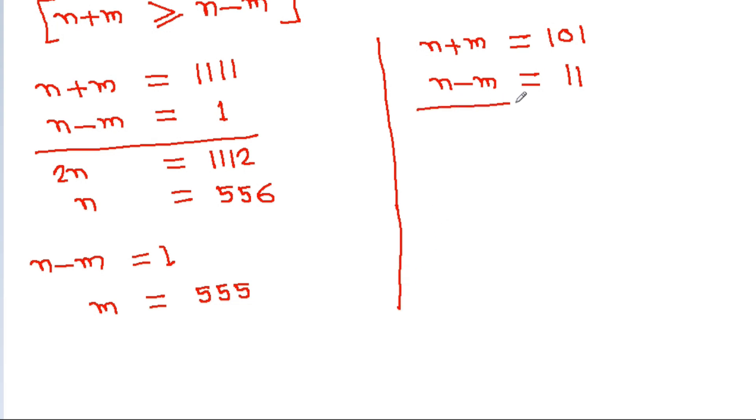And here if we add both equations then 2N will be equal to 112 and N will be equal to 56 and N minus M equals 11. So M will be equal to 45.